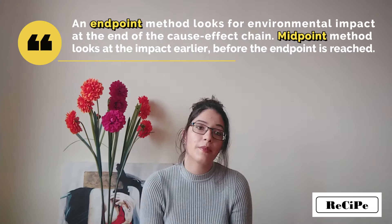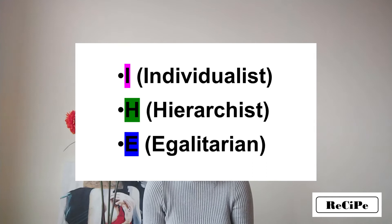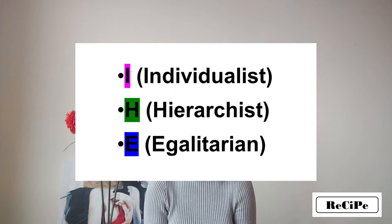ReCiPe uses three cultural perspectives corresponding to three different letters. The Individualist is a short-term perspective with an optimist view that technology can avoid many problems in the future. The Hierarchist is a consensus model and is often considered the default model. The Egalitarian is considered long-term, based on precautionary principle thinking.